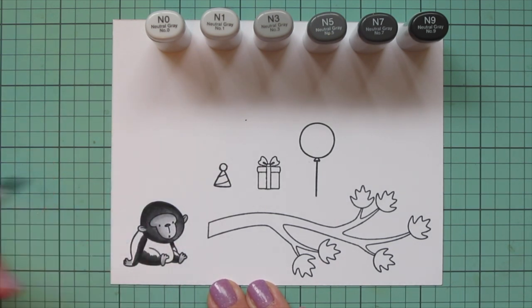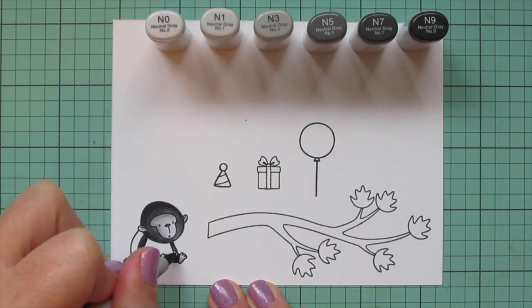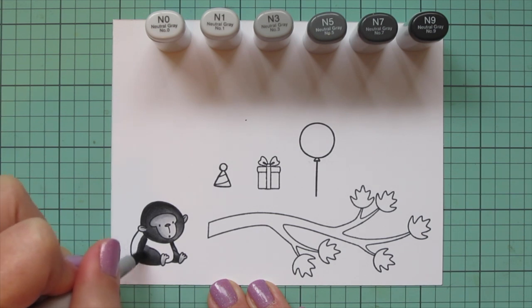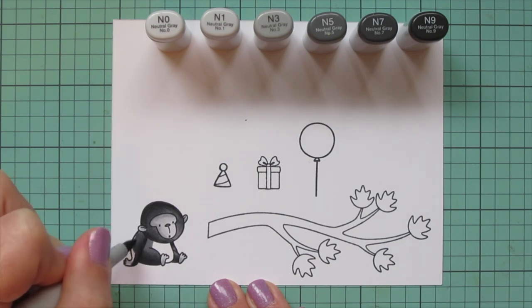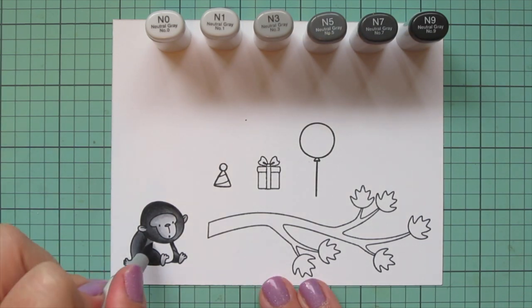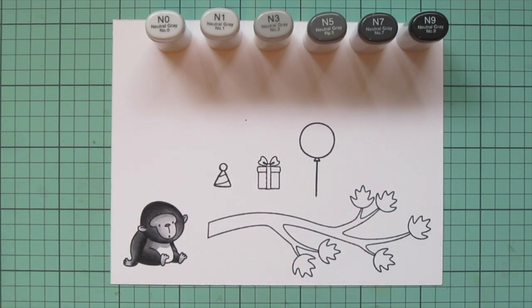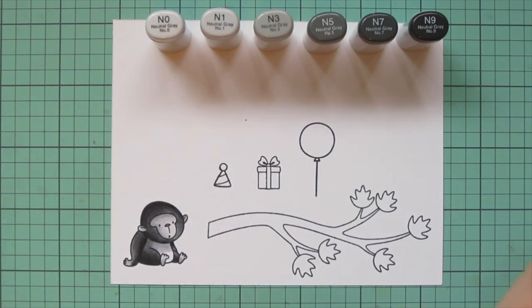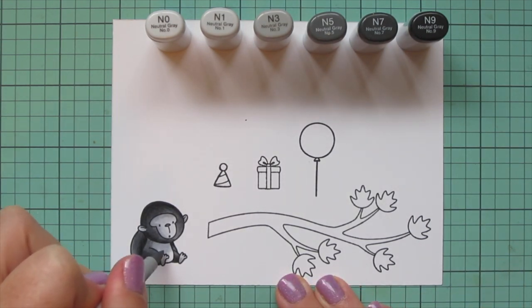And I do really like how these neutral grays worked on this gorilla so that's kind of what inspired me to try them again for today. I did also color in his nose with that N5 just to give that a bit more definition as well. And then where the area of his kind of side of his body meets the belly I'm going to blend over that with the N3 and then I'll finish off his belly with the N1 and the N0.